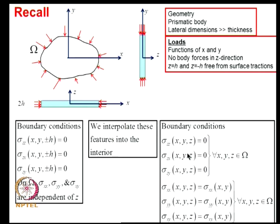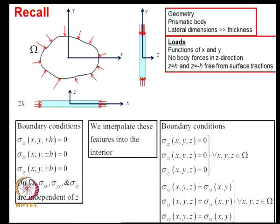There is no normal stress and no shear stresses on the free edges, and on the loaded edge the loading is independent of Z. We presume that the thickness of this object is small in relation to the lateral dimensions, so we interpolate that features strictly valid at the boundaries are also true in the interior. That means sigma_ZZ, sigma_ZX, sigma_ZY are identically equal to zero for all X, Y, Z in the domain omega.